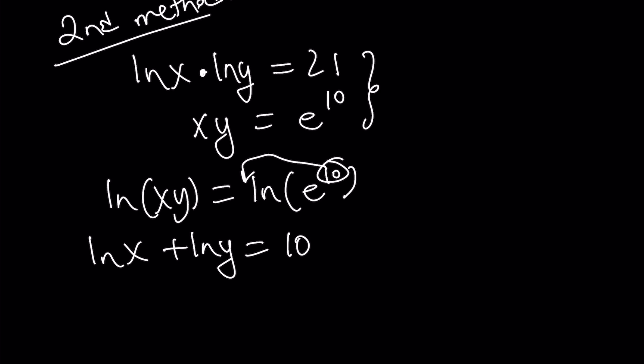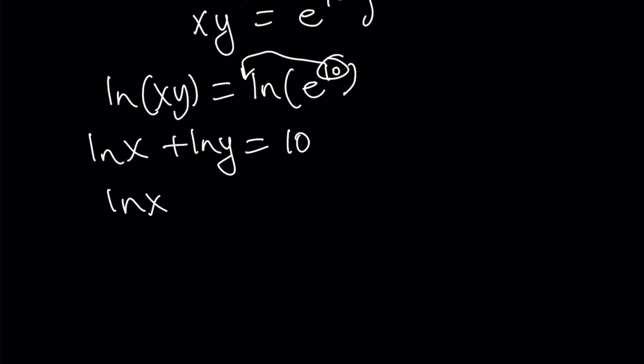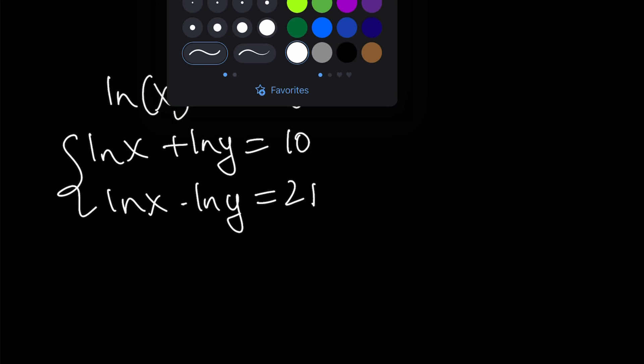So now we have ln x plus ln y is equal to 10, and ln x times ln y is equal to 21. And now this is our new system. So by using properties of logs, we are able to write this as a system in two variables. Now, here's what we're going to do. We're going to use substitution again.